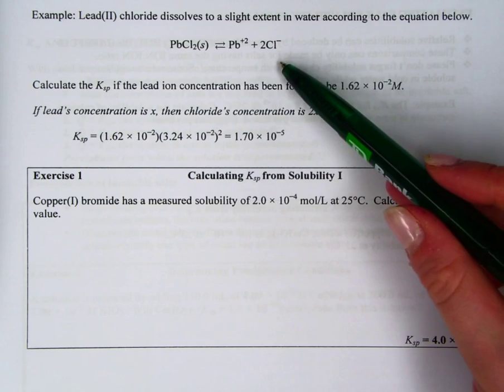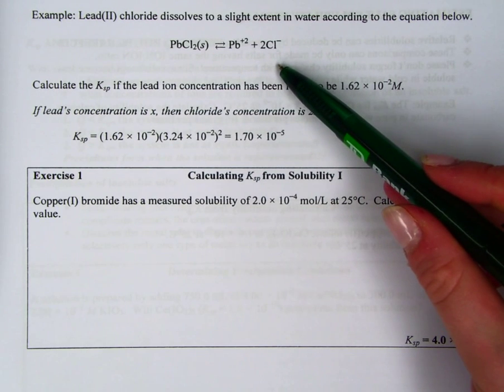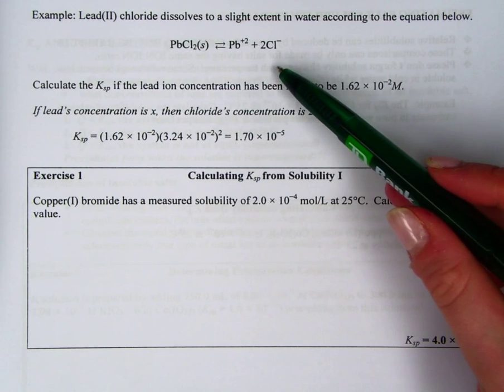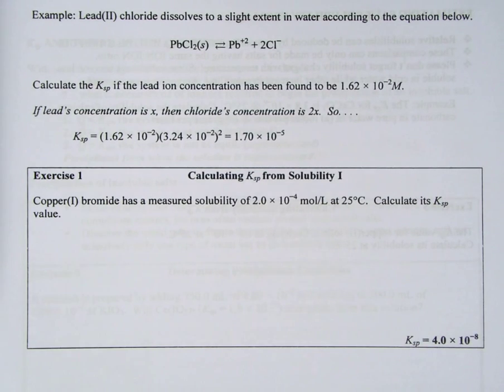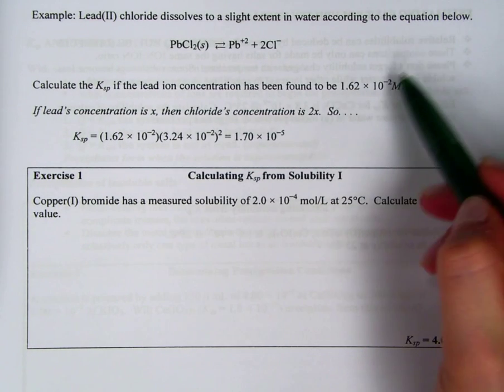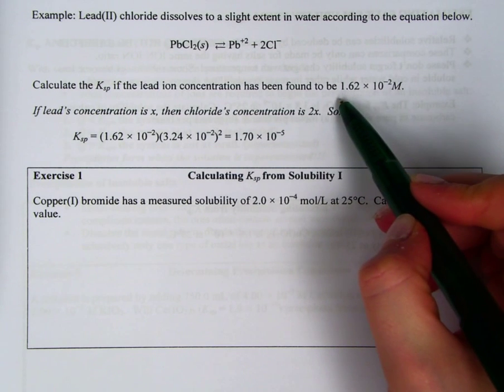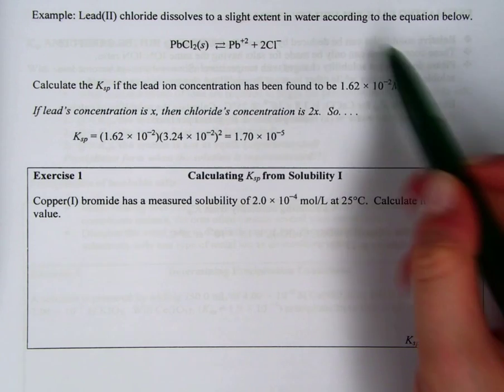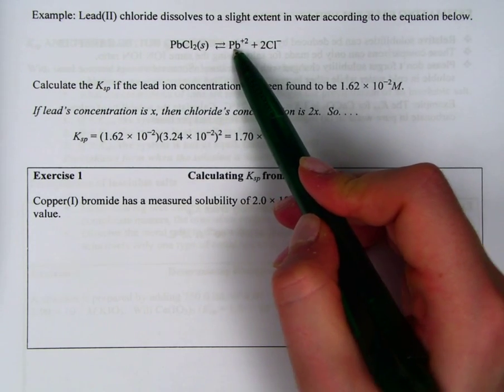Now here's the important thing. Lead 2 chloride is PbCl2. So in water, it doesn't make Cl2-. It makes 2 Cl-. And don't forget about that. It gives you the concentration of the lead ion.